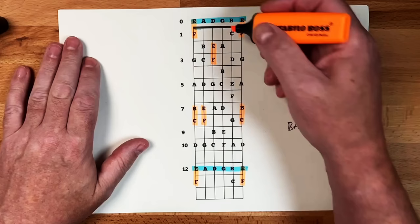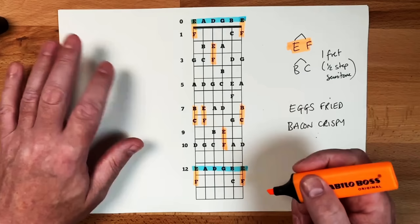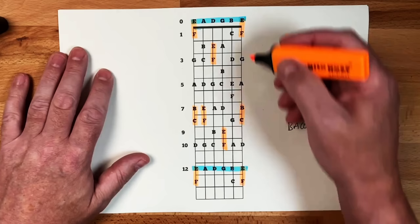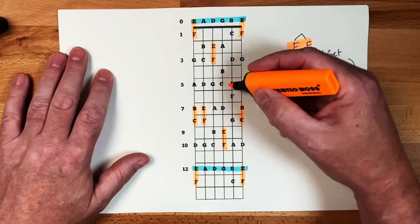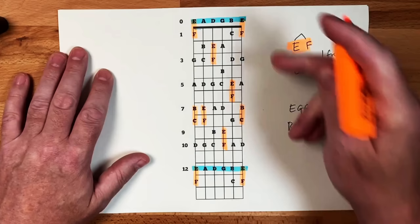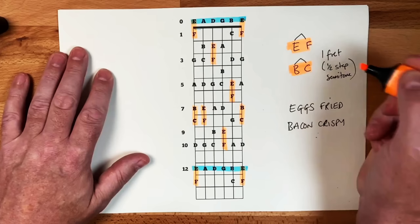Moving on to the G string, we go G, A, B, C, D, E, F. We had to come further up the neck to find that one, but it's there all the same. On the B string, let's have a look. B, C, D, E, F. And you can see that it lives there for the E and the F. We've already done it on this thin E string when we were mirroring over. So let's finish this off by finding these semitones or half steps. And let's find the B, C.